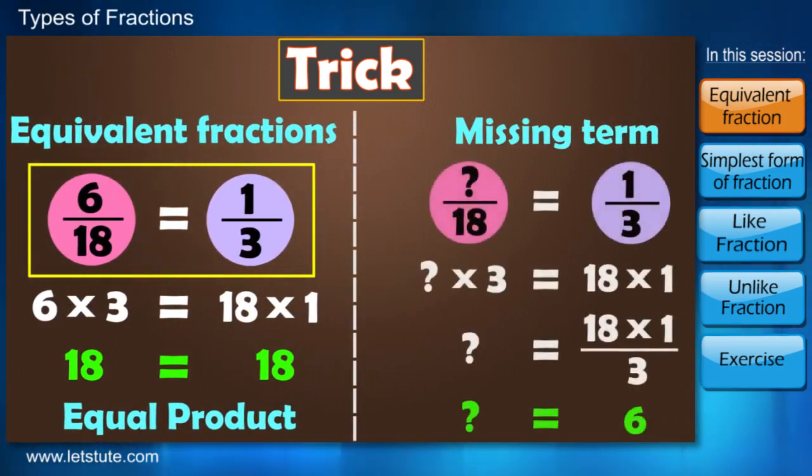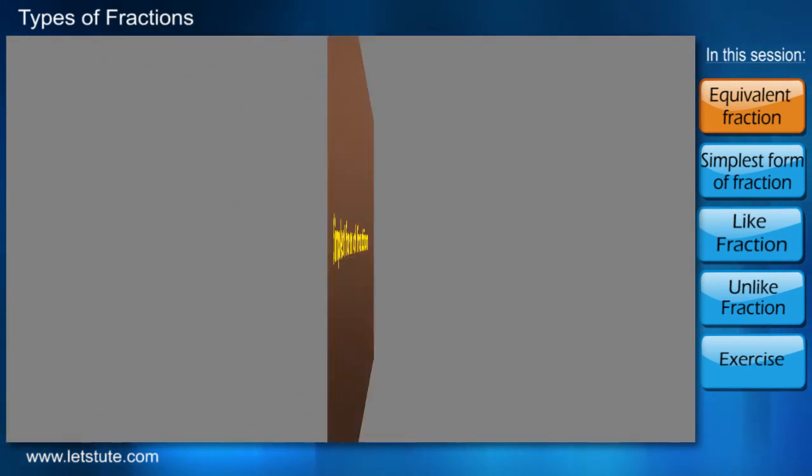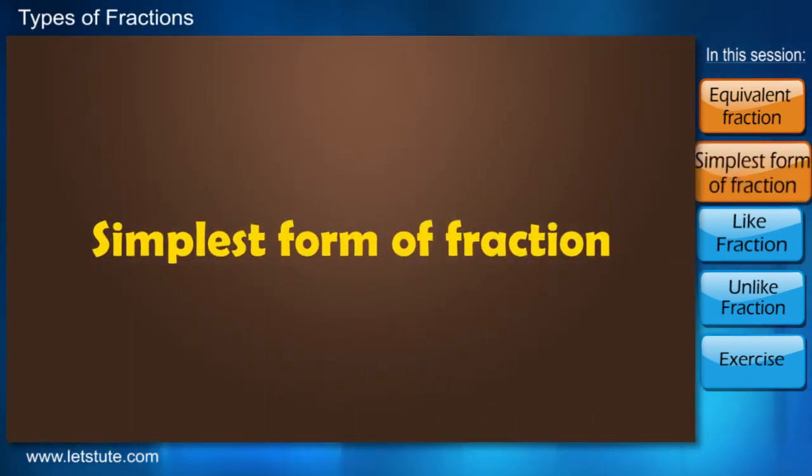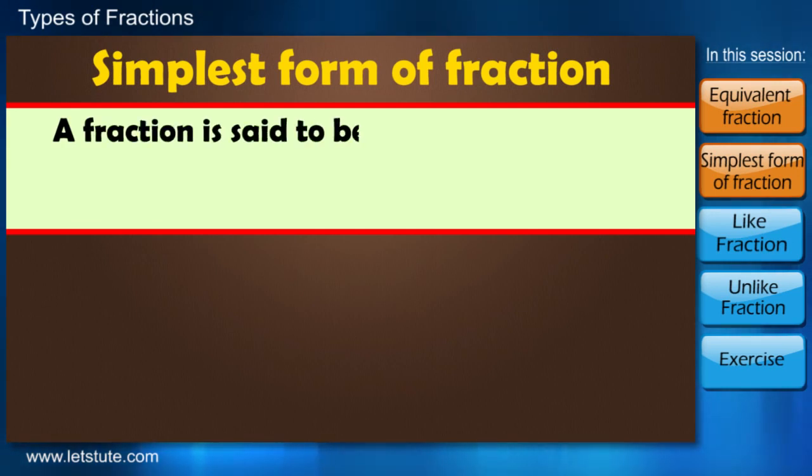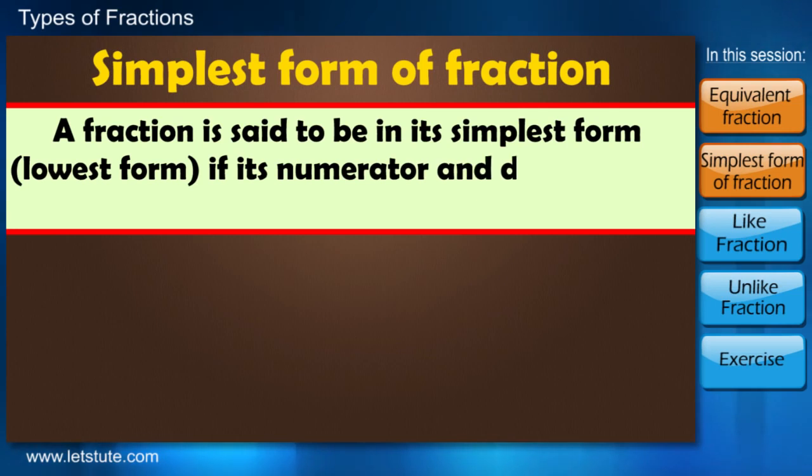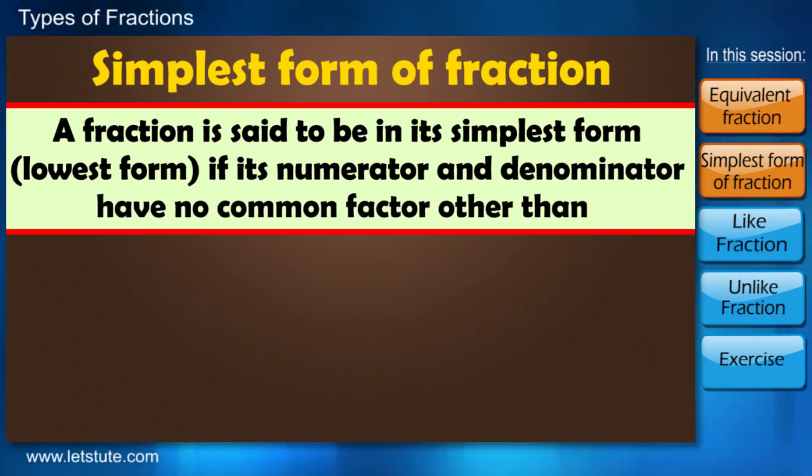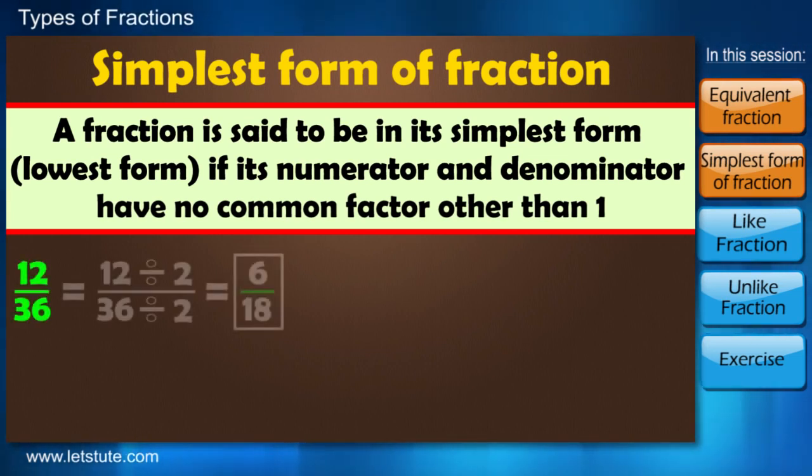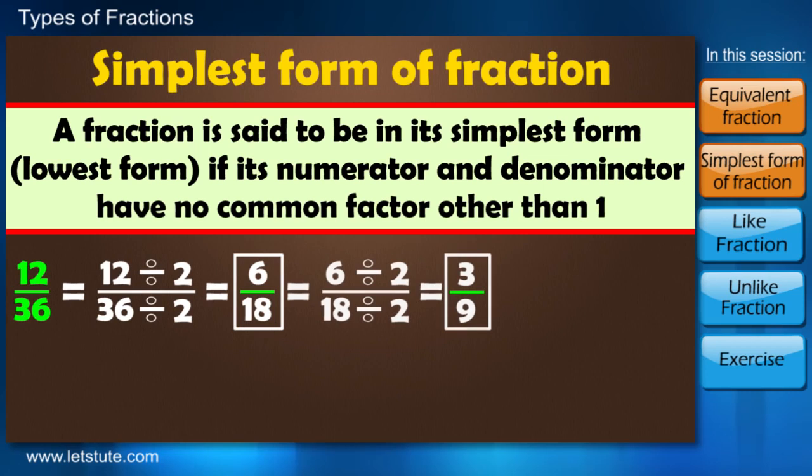Let's move to another type of fraction which is known as the simplest form of fraction. A fraction is said to be in its simplest form if its numerator and denominator have no common factor other than one. To obtain the simplest form of fraction, we keep dividing numerator and denominator by the same number until they cannot be divided any further.